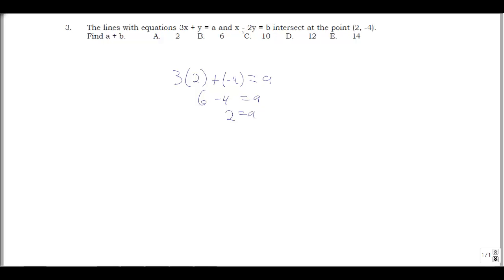To find b, I'm just going to plug in 2 for x in the second equation. It's 2 minus 2 times negative 4, that should be b. So that's 2 plus 8 equals b. That's 10 equals b.